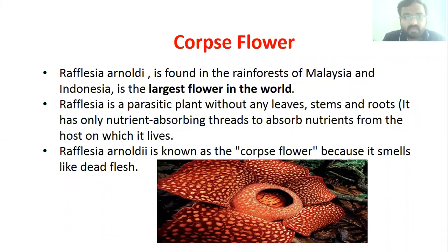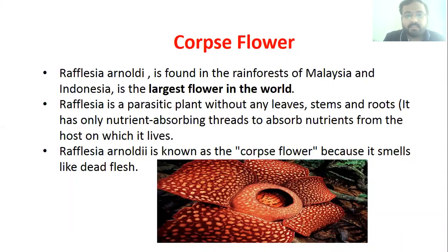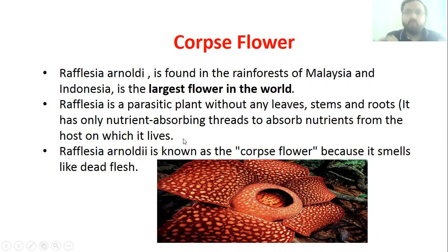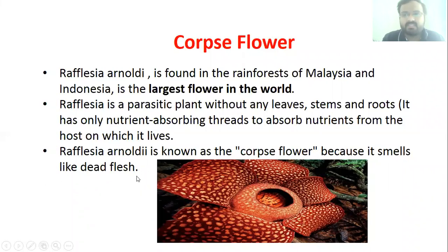Another important example is the corpse flower, scientific name Rafflesia Arnoldii, found in the rainforests of Malaysia and Indonesia — the world's largest flower. Rafflesia is a parasitic plant without leaves, stem, or roots. It has only nutrient-absorbing threads to absorb nutrients from the host on which it lives. It is called the corpse flower because it smells like dead flesh.